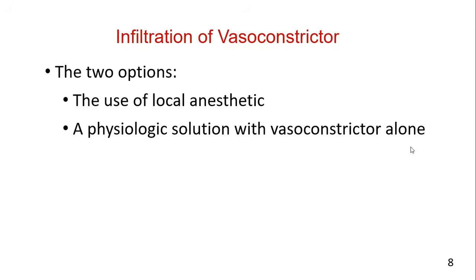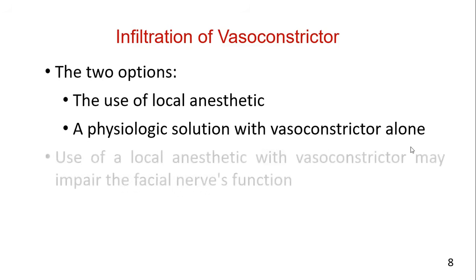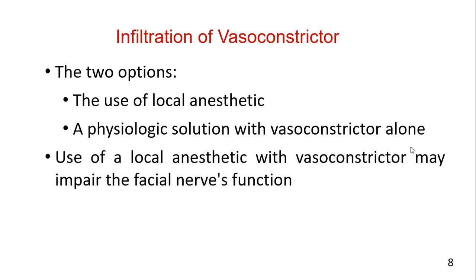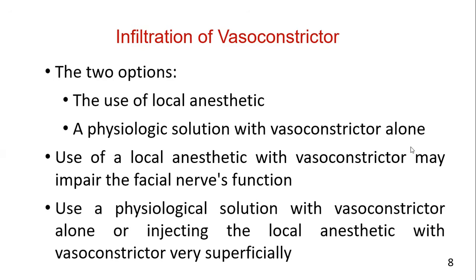Two options for hemostasis are currently available: the use of local anesthetic with vasoconstrictor, or a physiologic solution with vasoconstrictor alone. Use of local anesthetic with vasoconstrictor may impair facial nerve function and interfere with the use of a nerve stimulator during the surgical procedure. Therefore, consideration should be given to using a physiologic solution with vasoconstrictor alone, or injecting the local anesthetic very superficially. Muscle relaxants used in general anesthesia can also impair nerve function and must be avoided.